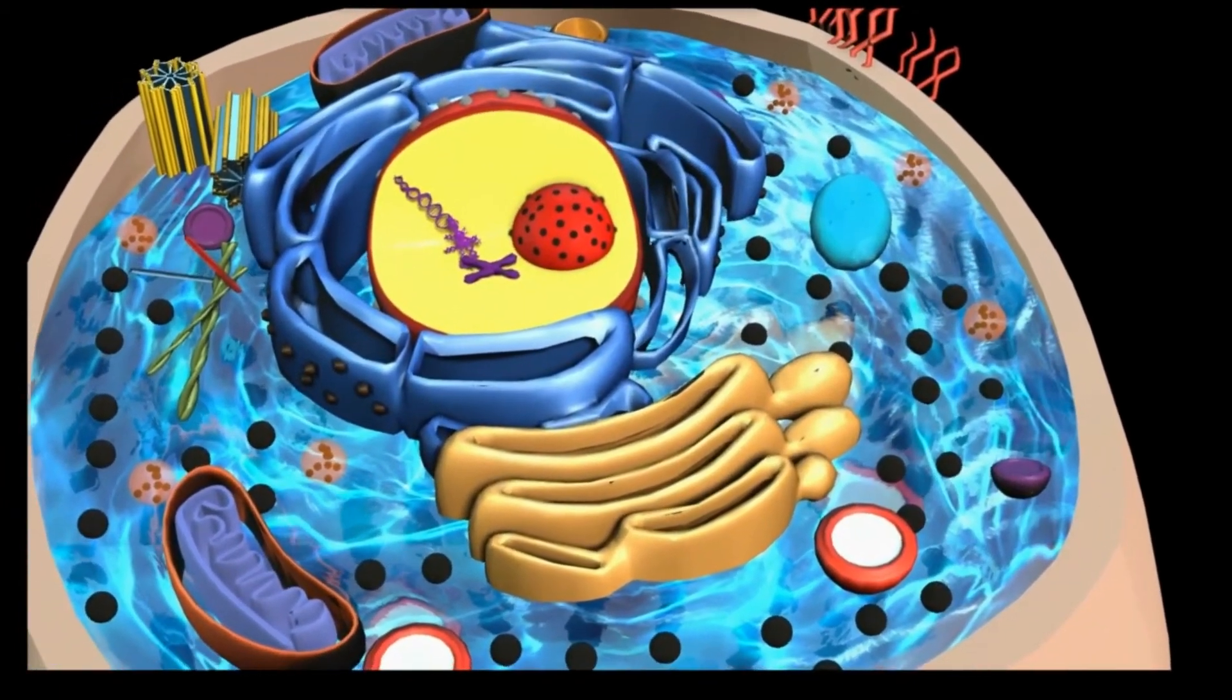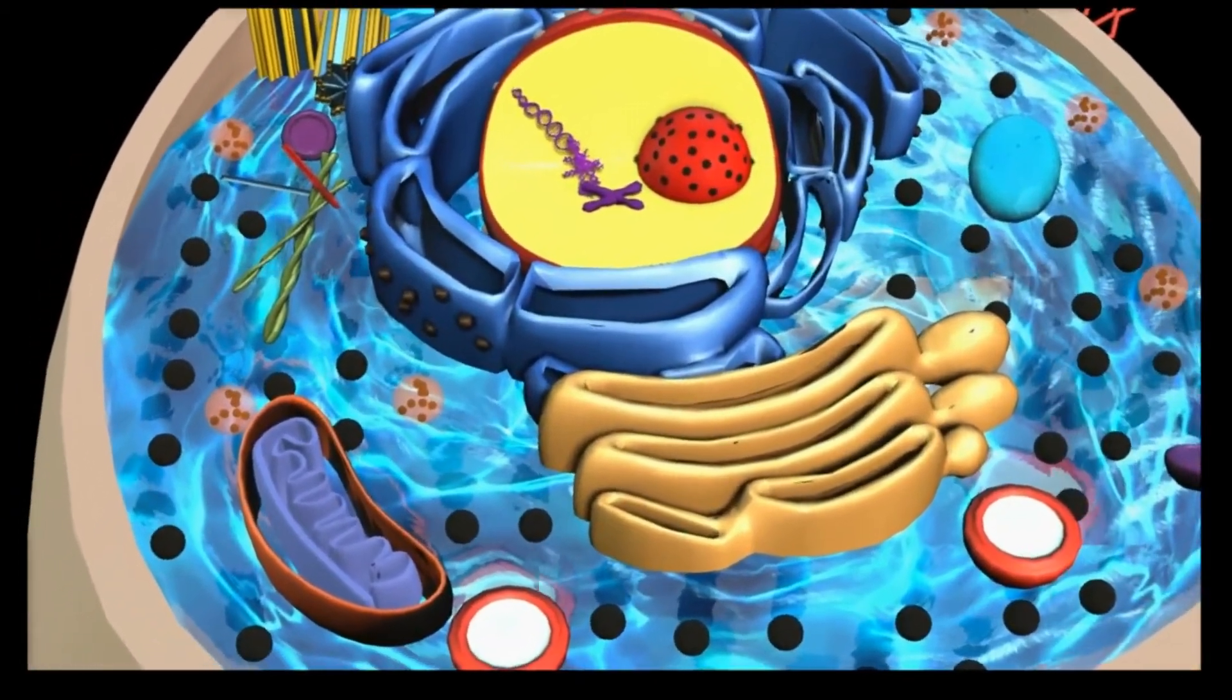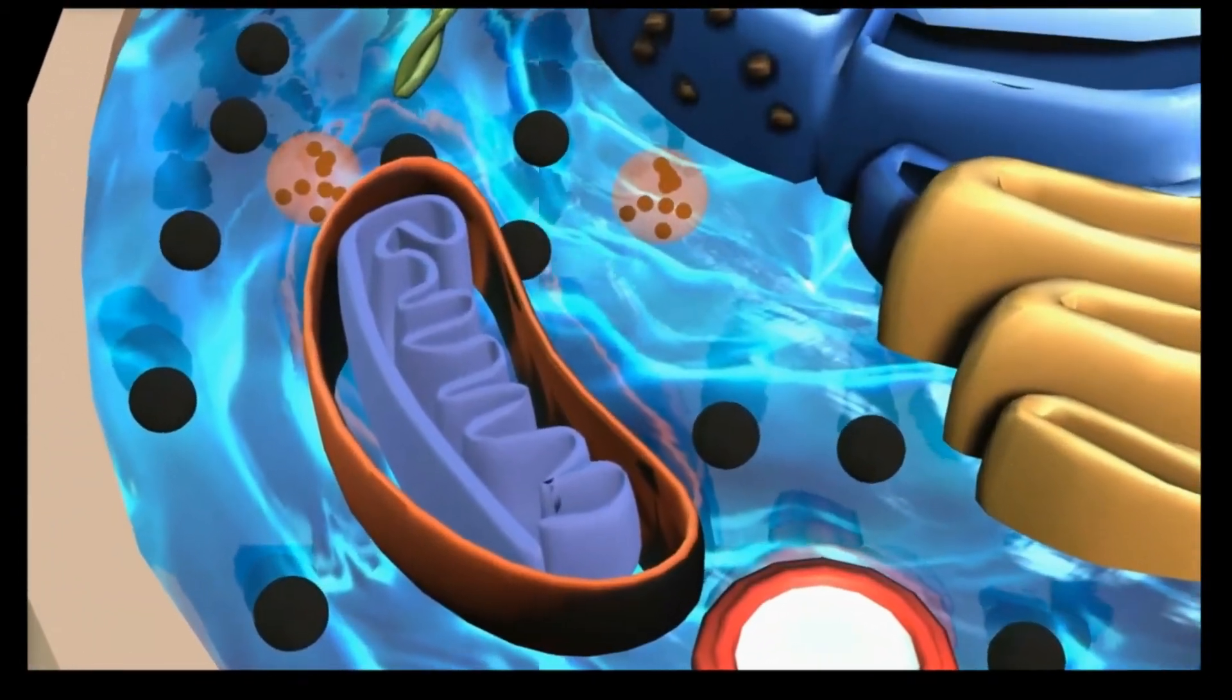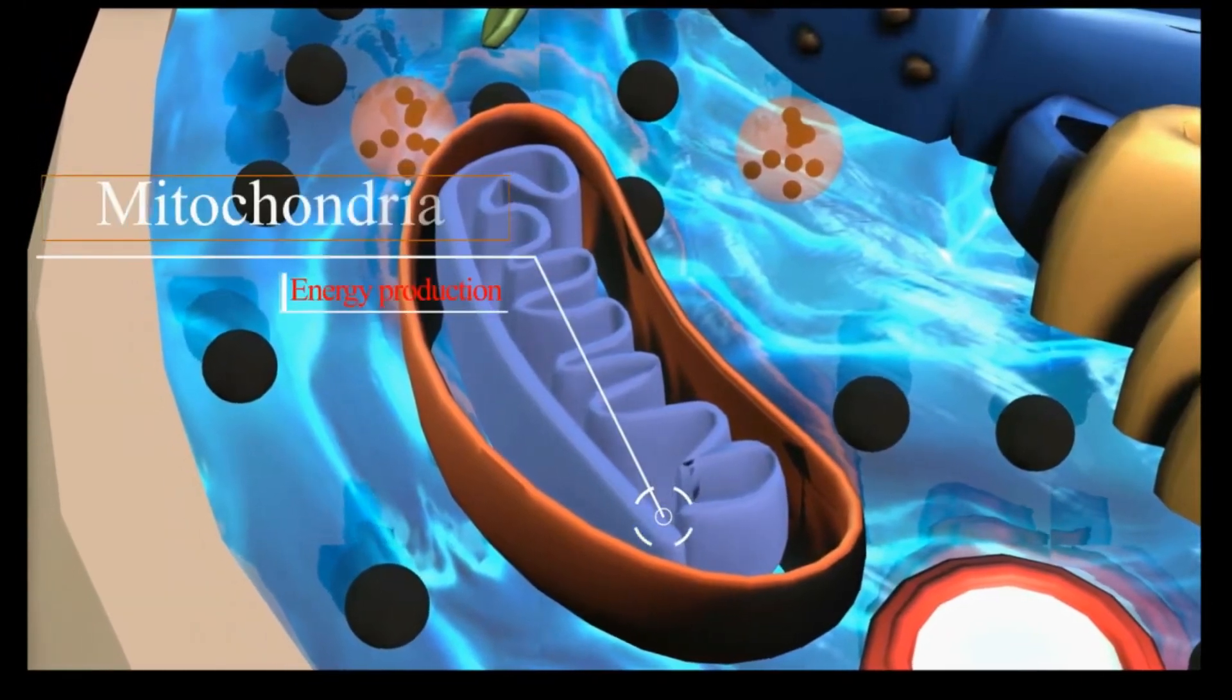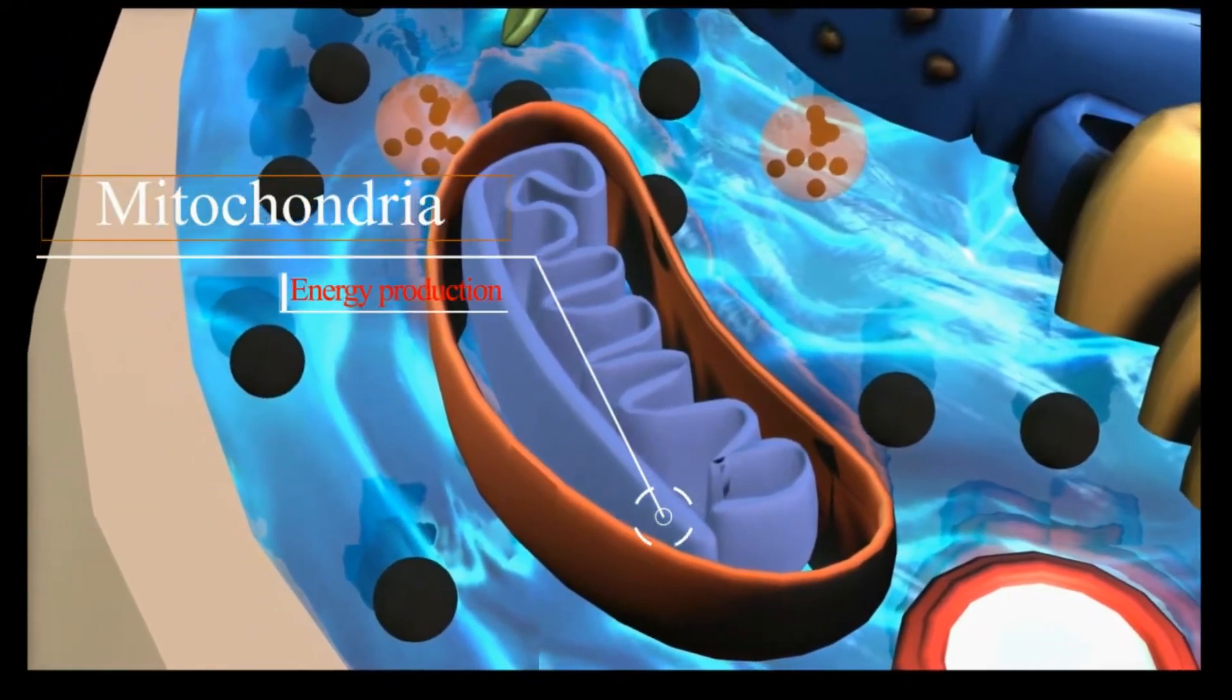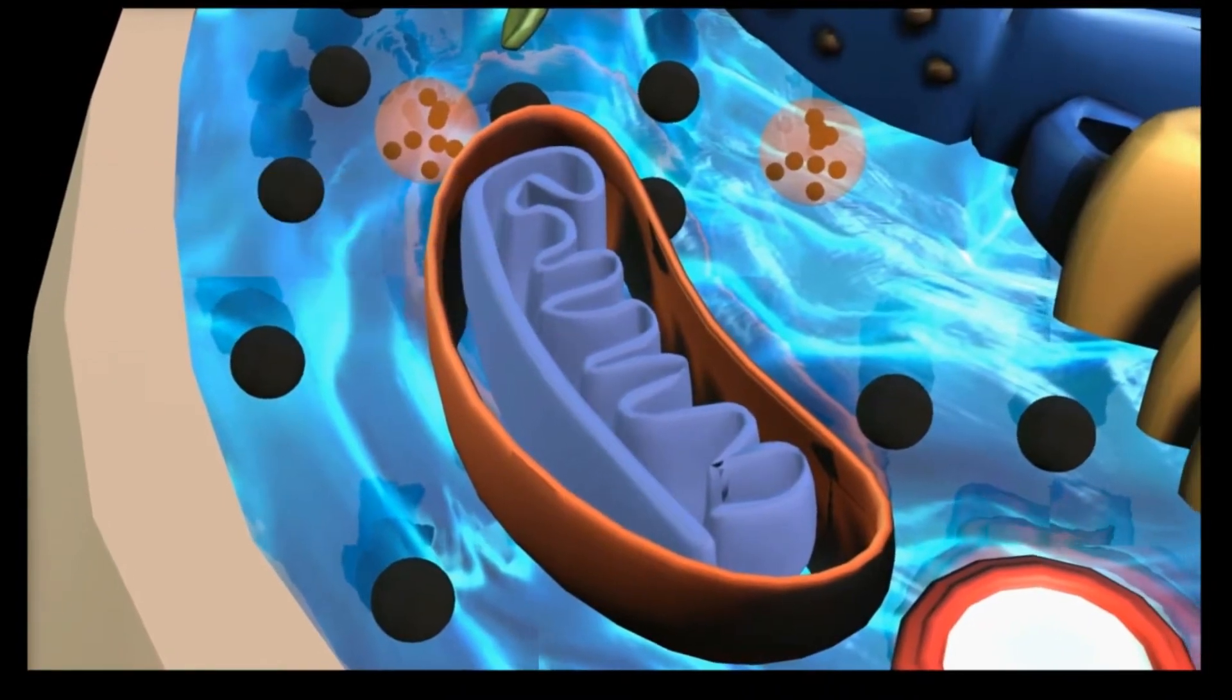The organelles of the cell are mitochondria, which produce energy for the cell in the form of a chemical substance called ATP through a process called cellular respiration.